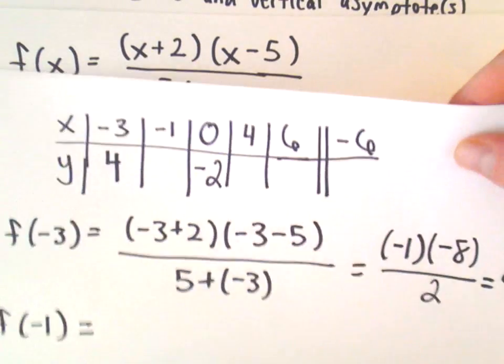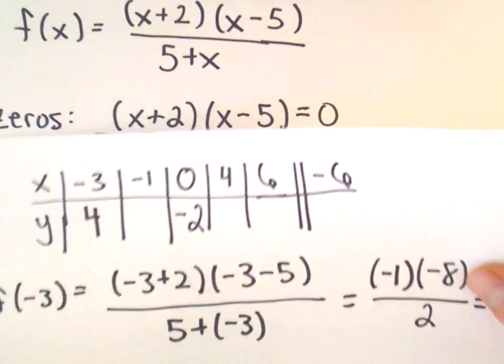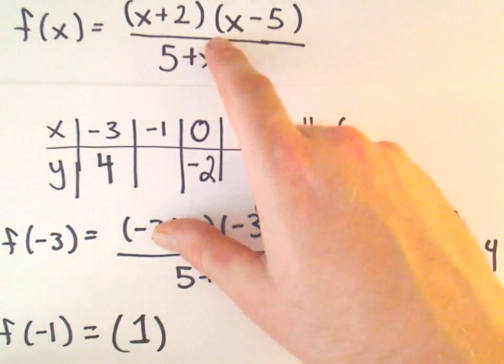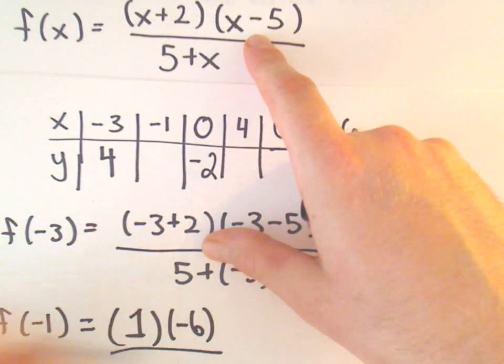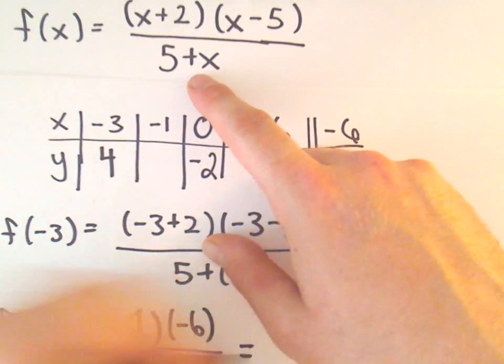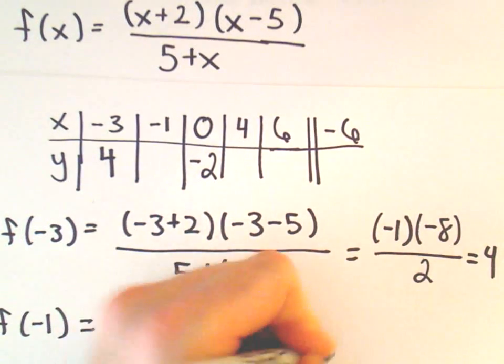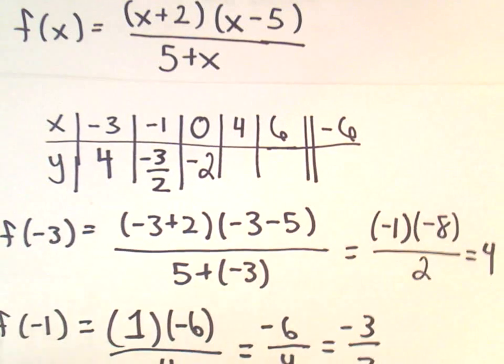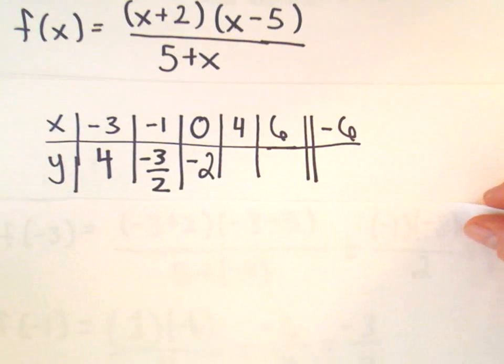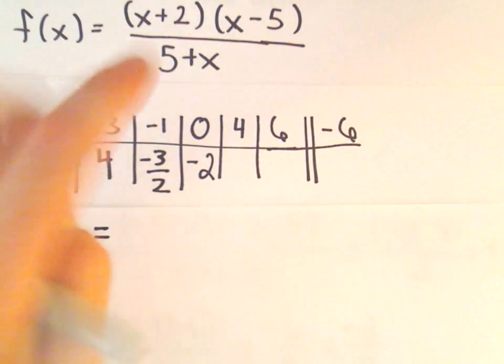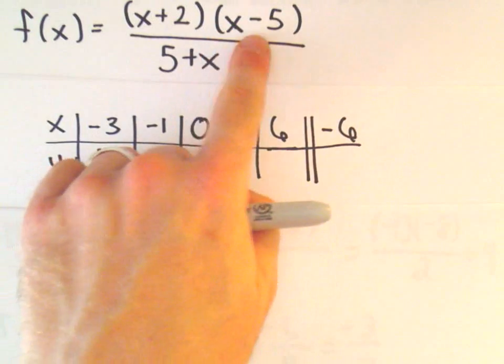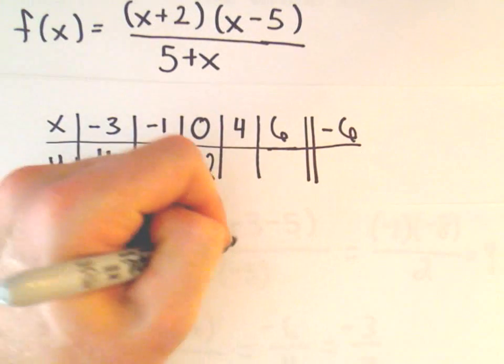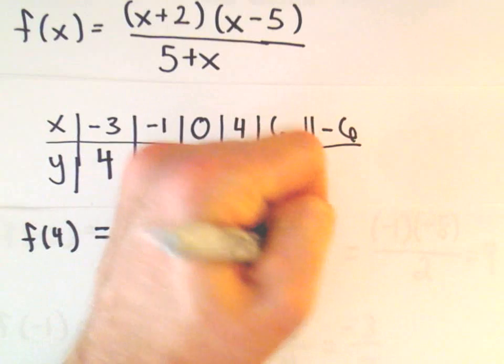Next we've got f of negative 1. So negative 1 plus 2 will be 1, negative 1 minus 5 will be negative 6. 5 plus negative 1 will be 4. So that'll be negative 6 over 4 or negative 3 over 2. Let's plug in positive 4. So if we plug in positive 4, 4 plus 2 is 6, 4 minus 5 will be negative 1. 5 plus 4 will be 9. And that'll be negative 6 over 9, or negative 2 thirds.